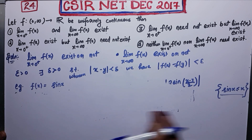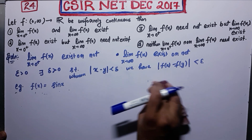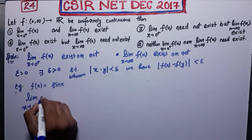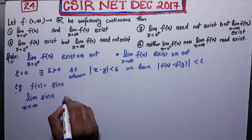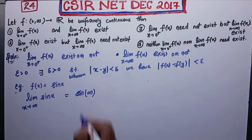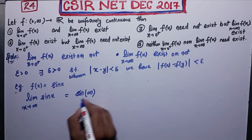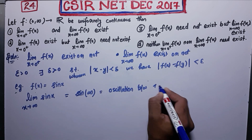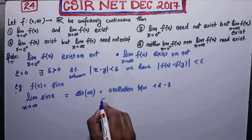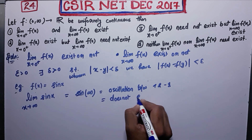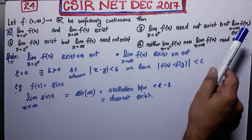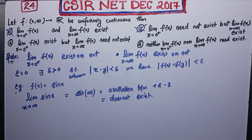Since sin(x) is uniformly continuous, I can use it as a counter-example. Now check: limit as x→∞ of sin(x). This gives sin(∞), which has no fixed value — it oscillates between 1 and −1. So this limit does not exist. Since the limit does not exist, the first and third options are discarded.